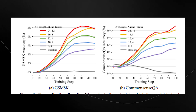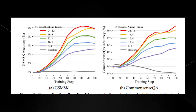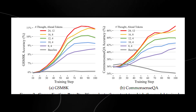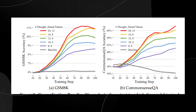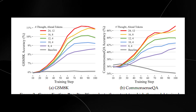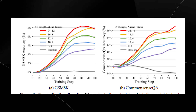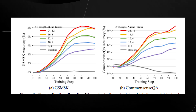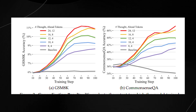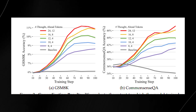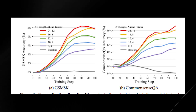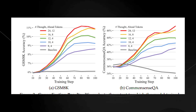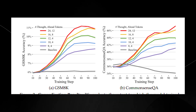On CommonsenseQA, accuracy improved from 36.3% to 47.2%, and on GSM8K it improved from 5.9% to 10.9%. Importantly, performance scaled with the length of the reasoning chains generated during pre-training, confirming that the models were learning useful multi-step reasoning.